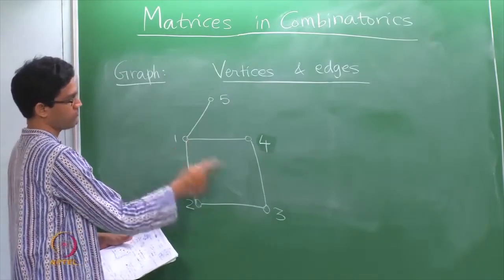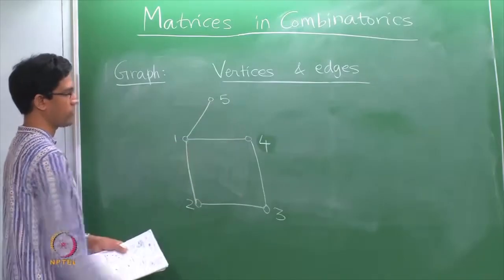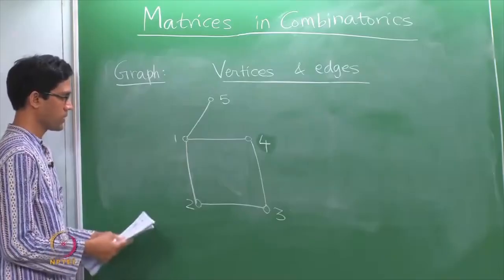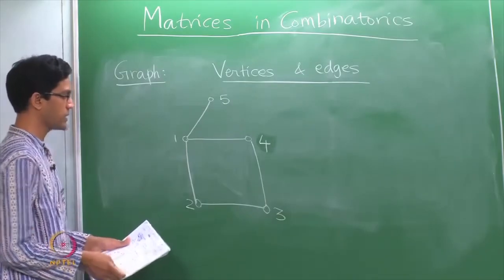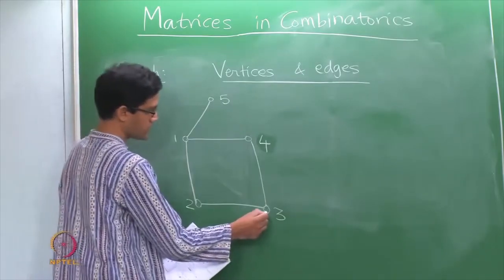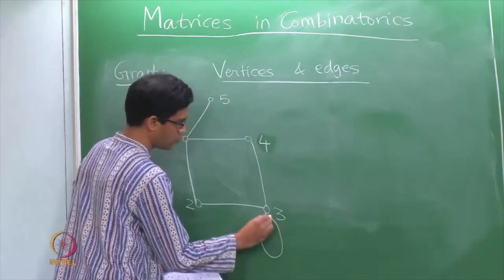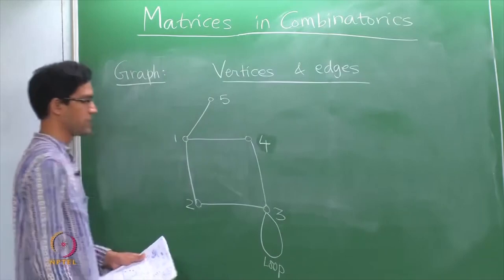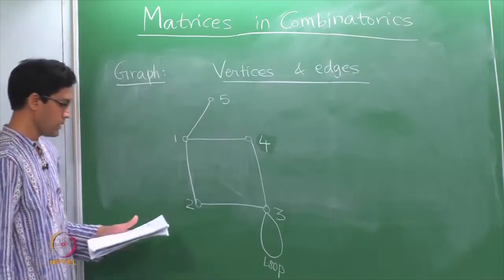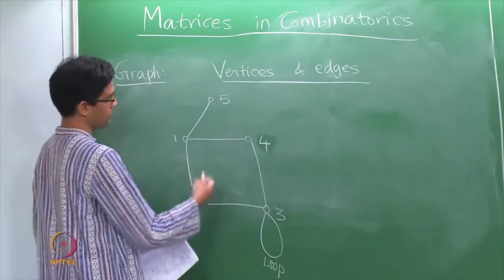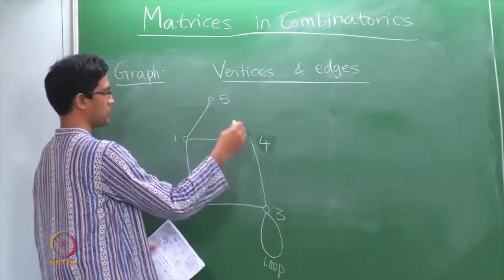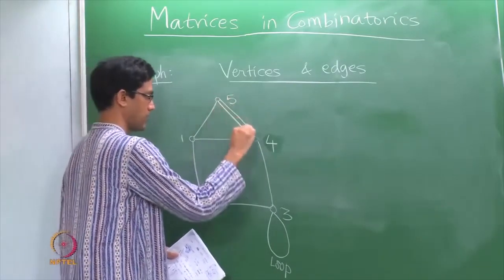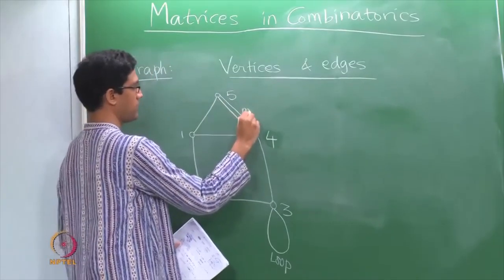For instance, there is no edge between 1 and 3, no edge between 4 and 5, and 2 and 5 — these are all pairs which do not have edges. Now, what we also allow is an edge which connects a vertex with itself, sometimes called a loop — think of it as a path which starts and ends at the same point. We can also allow multiple edges, say between 4 and 5 there are 2 paths; such a thing is sometimes called a multiple edge.